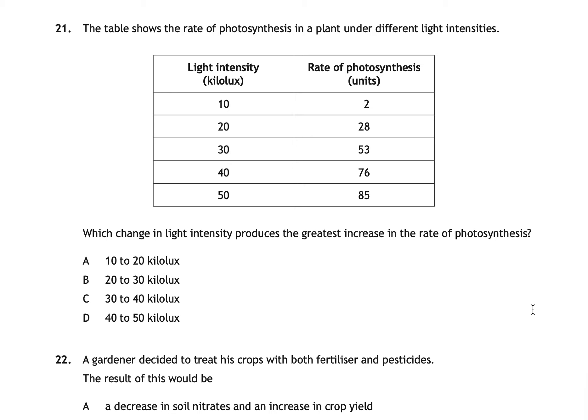Question twenty-one shows a table of photosynthesis rates under different light intensities from 10 to 50 kilolux, with rates increasing from 2 to 85. It asks which change in light intensity produced the greatest increase in the rate of photosynthesis. The correct answer is A: 10 to 20 kilolux. Calculating the difference at each step, the increase from 2 to 28 is 26 units, which is the largest.